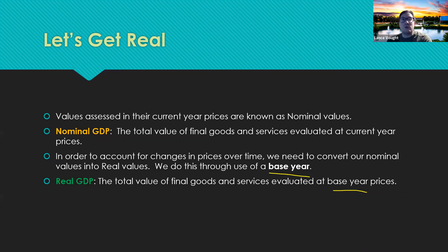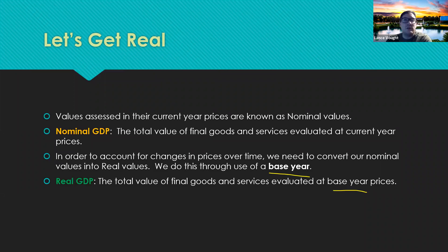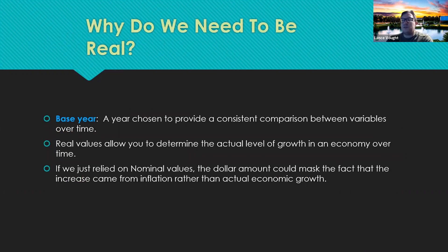A base year is a year chosen to provide a consistent comparison between variables over time. With just nominal GDP you can't determine how much the economy has truly grown because you're not accounting for inflation. We'll show by example just how much you would overstate the true growth rate if you don't convert to a real variable. We don't want to mask inflation or have inaccurate measurements. If you're running a business and you don't adjust for inflation, you might make a fatal mistake by being over-optimistic about projections because you didn't account for inflation.